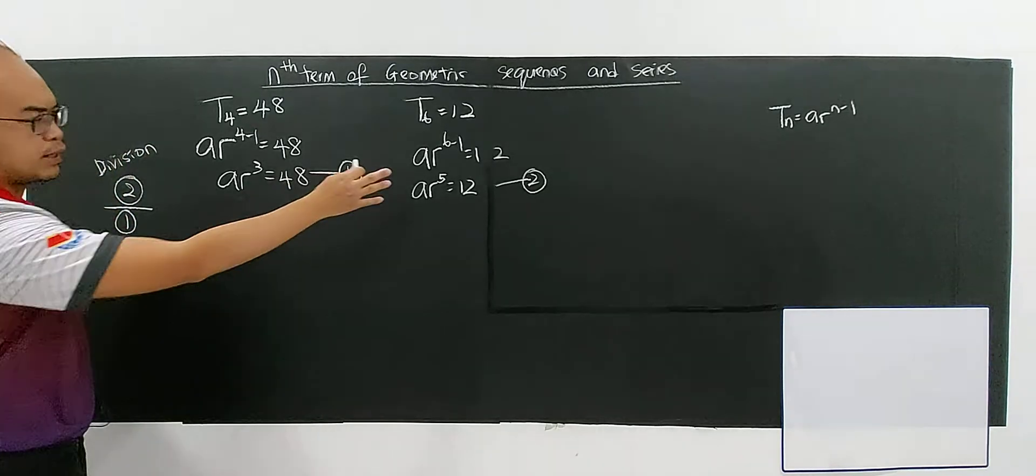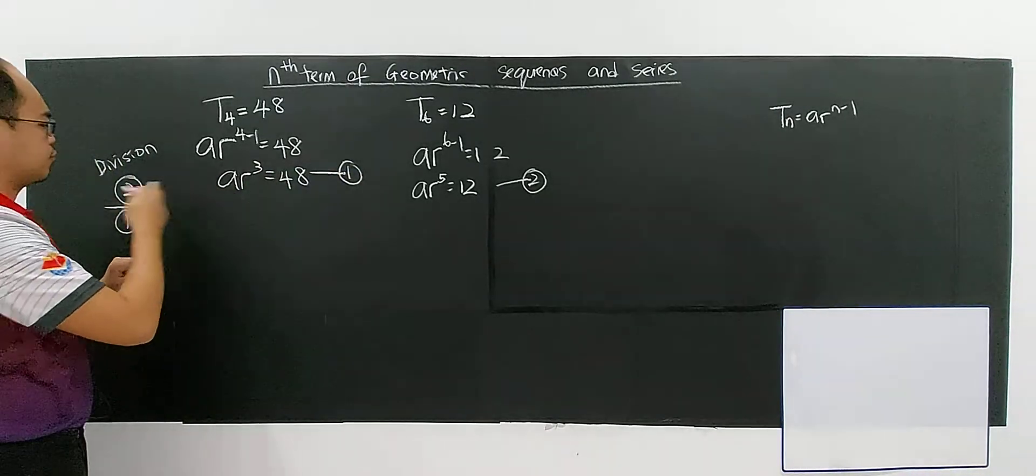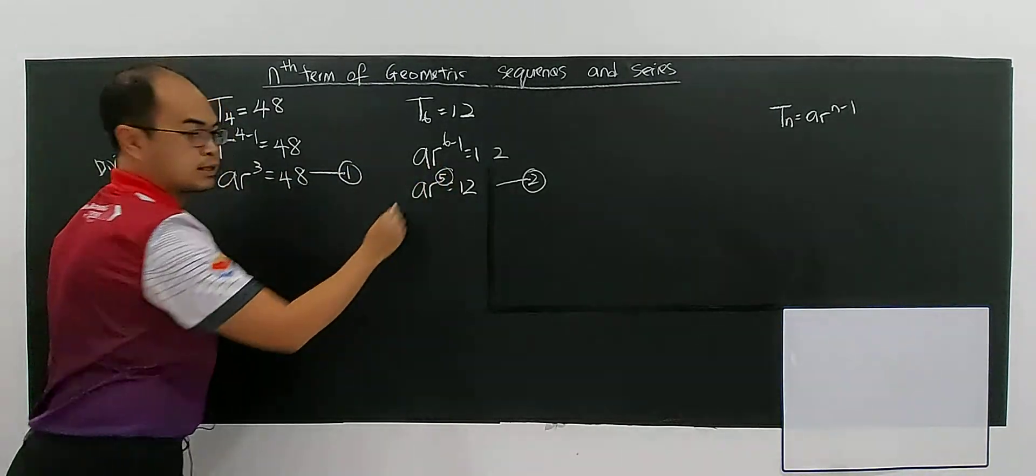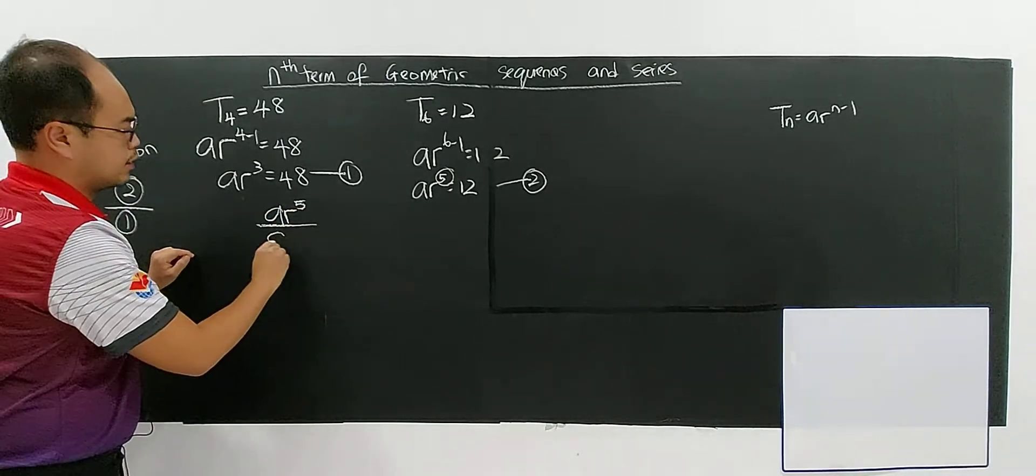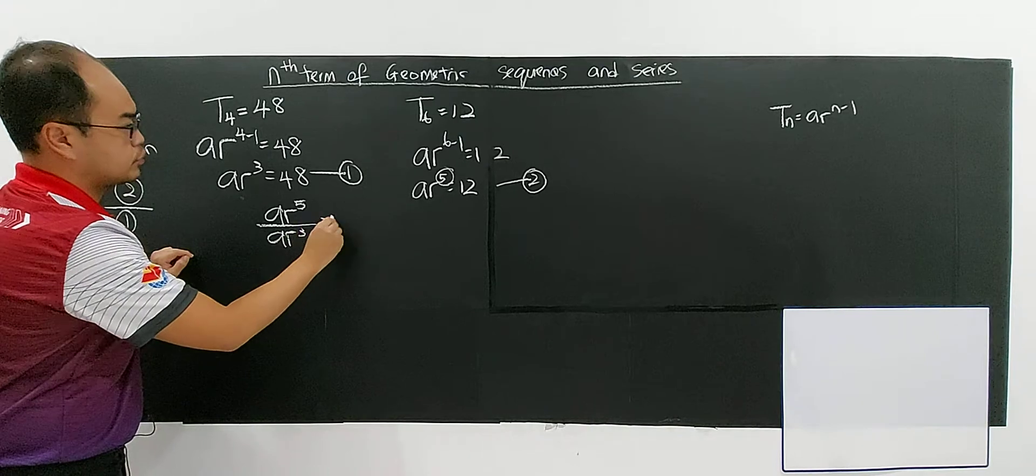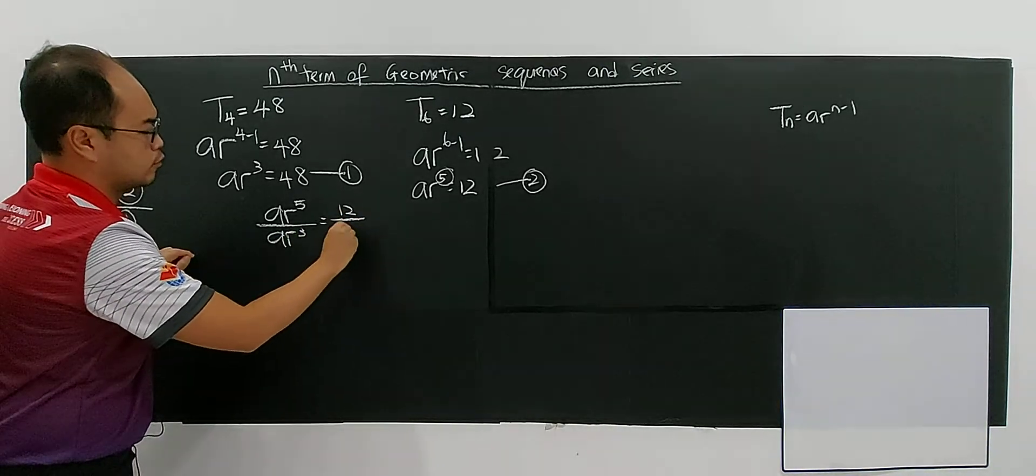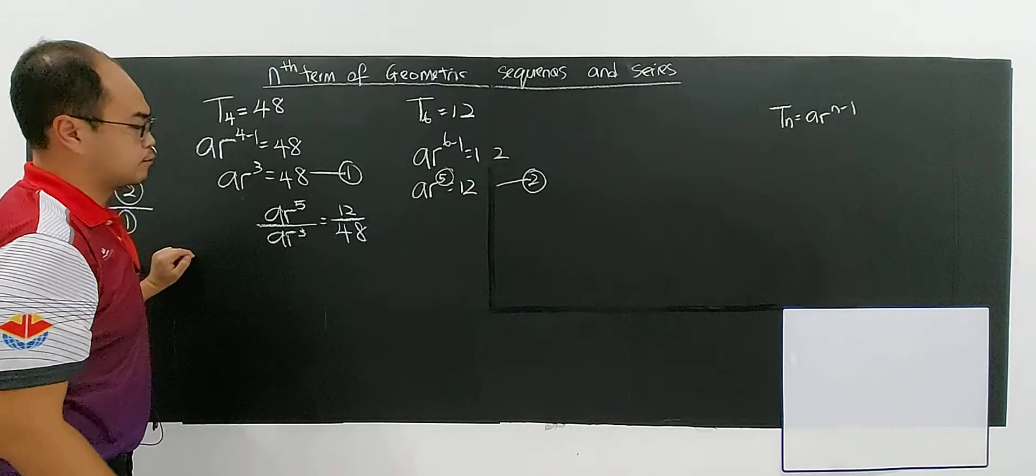I can take equation 1 divided by 2, or 2 divided by 1. I prefer 2 divided by 1 because the power is higher. So, ar⁵ divided by ar³ gives me 12 over 48.